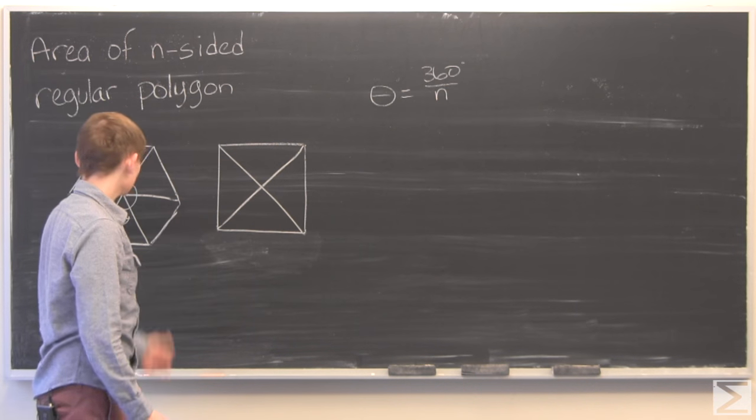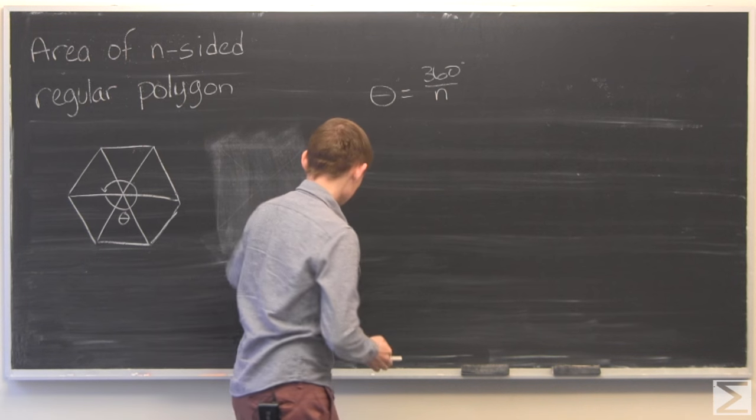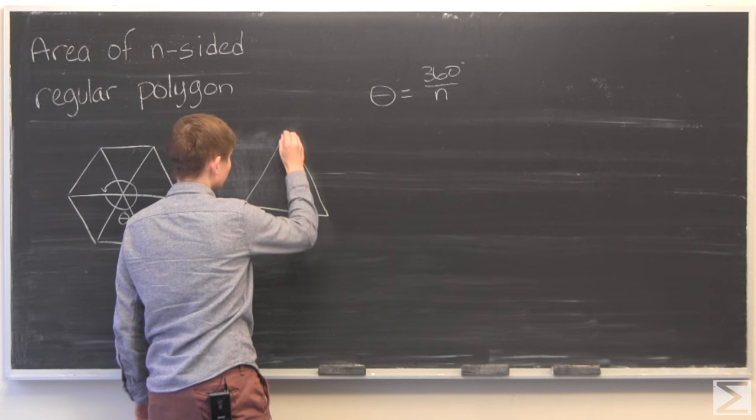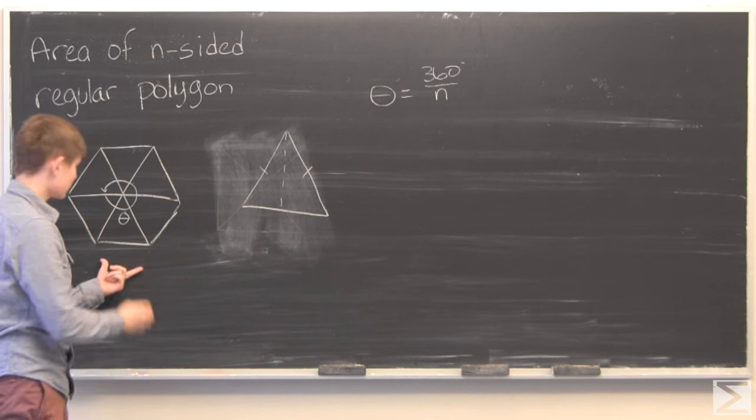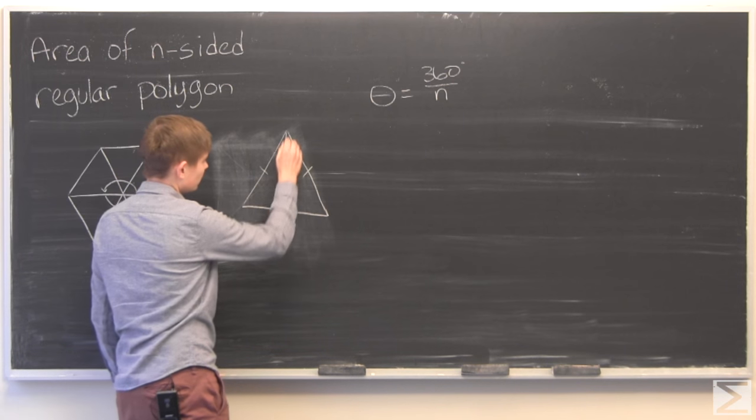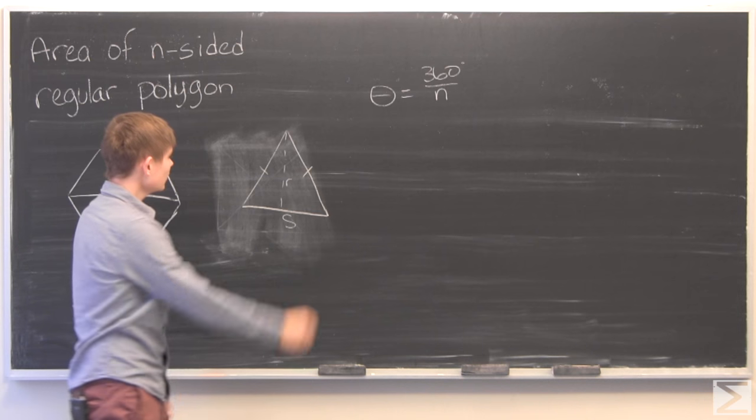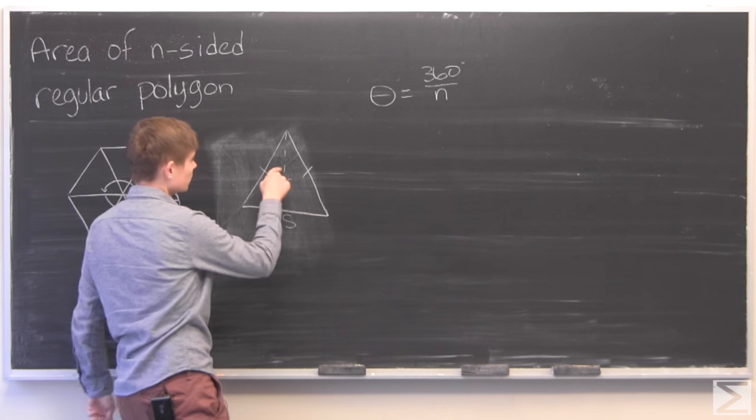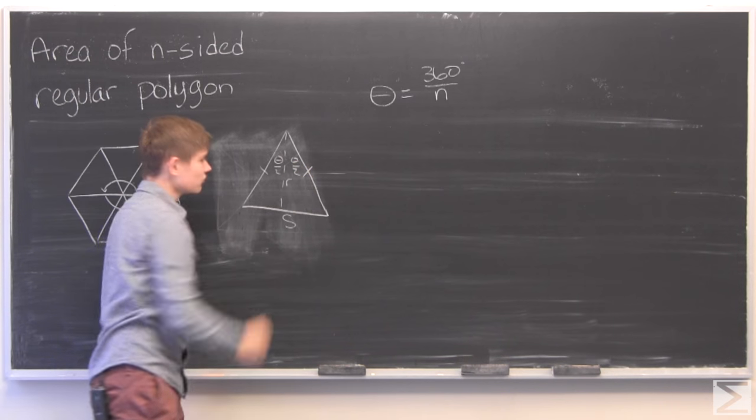So that is the angle theta. Now let's blow up one of these triangles. Let's label the side as S, so that means that this is S. And we'll label this drop-down perpendicular as R. Now since this is an isosceles triangle, this perpendicular will bisect this angle. And so we'll get theta over 2 for each side.